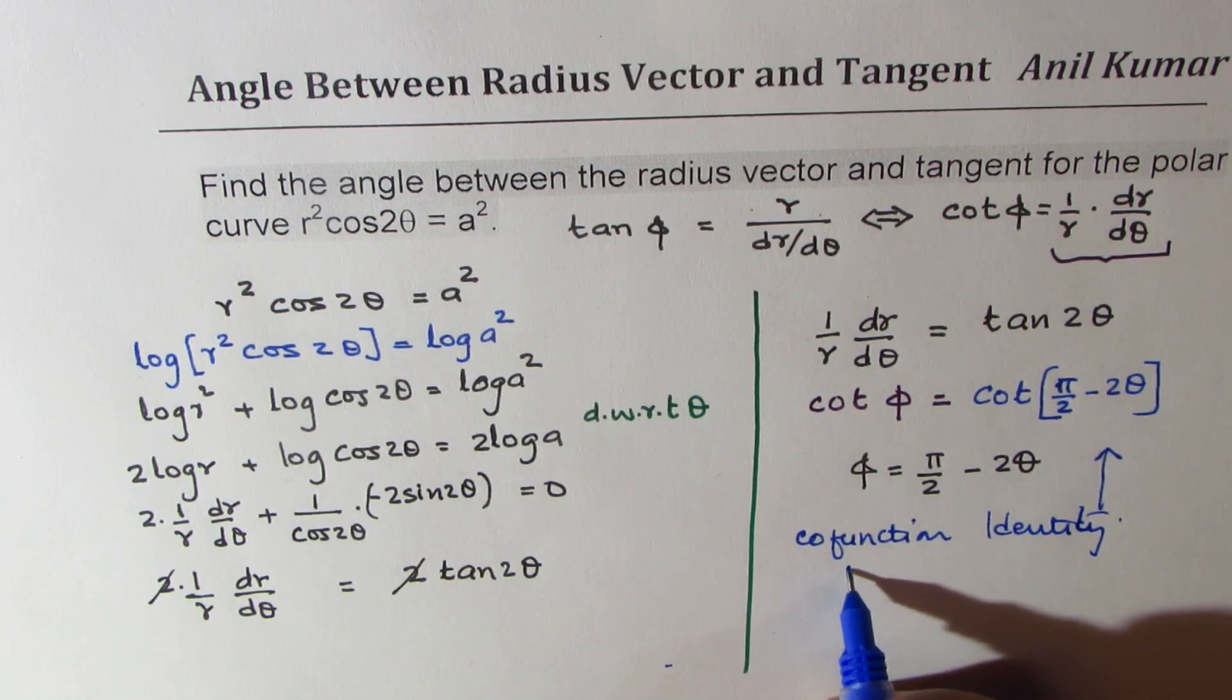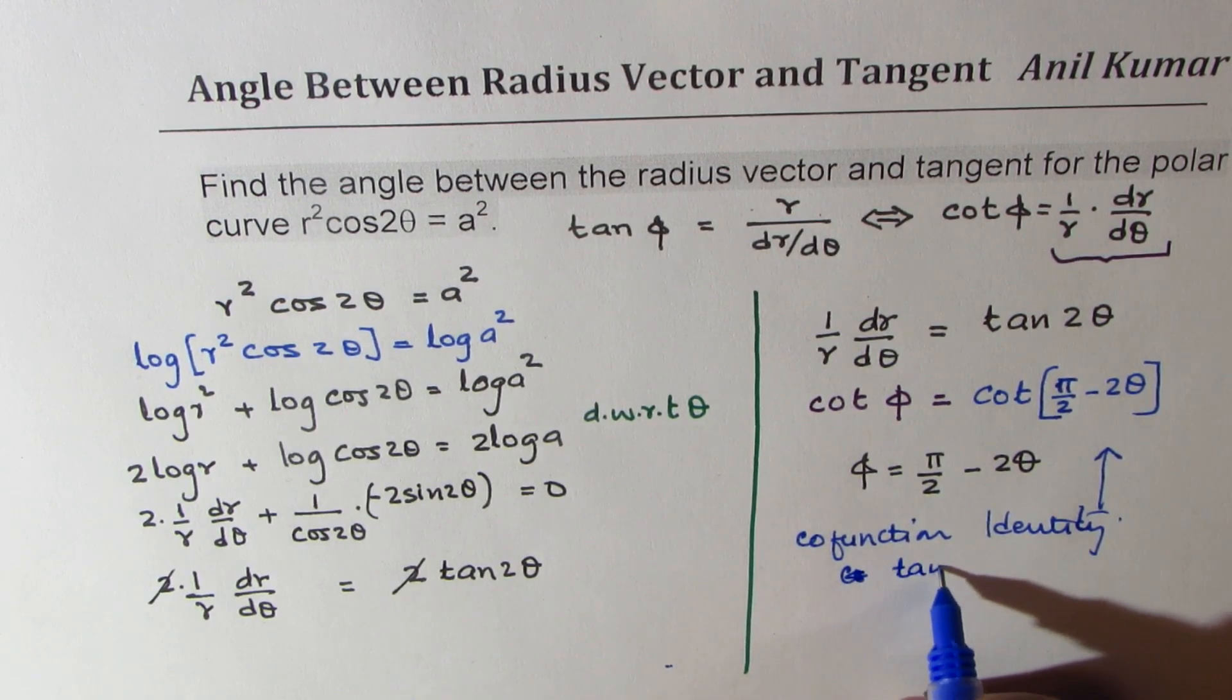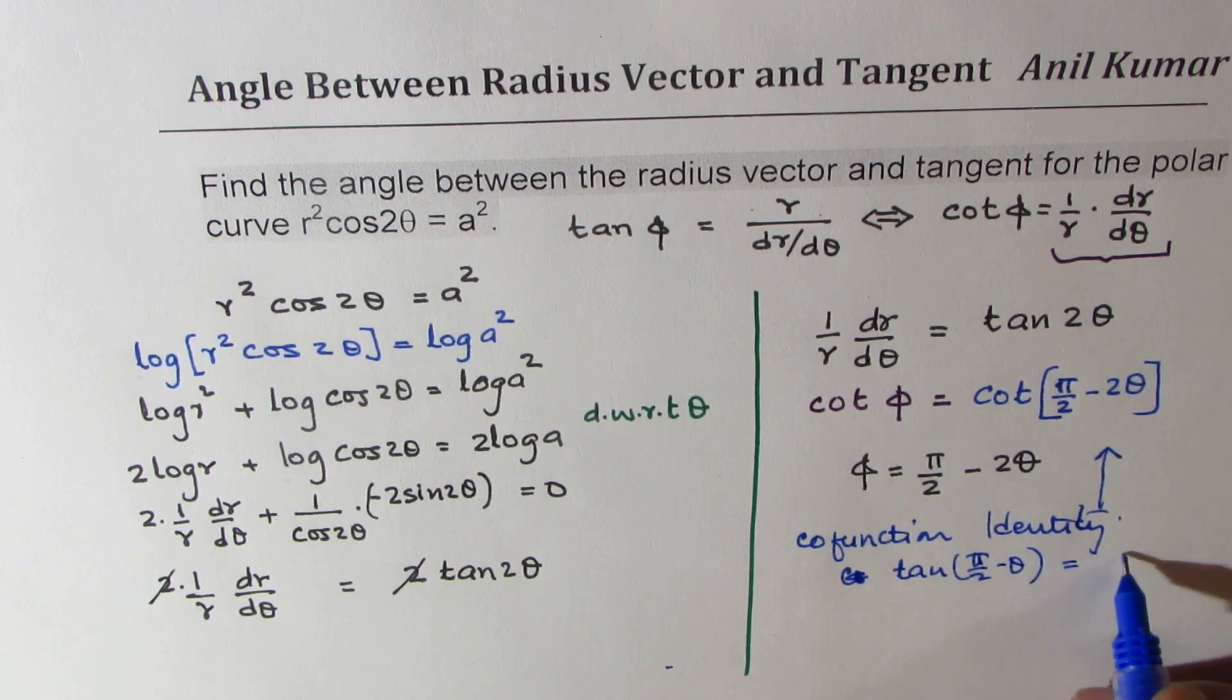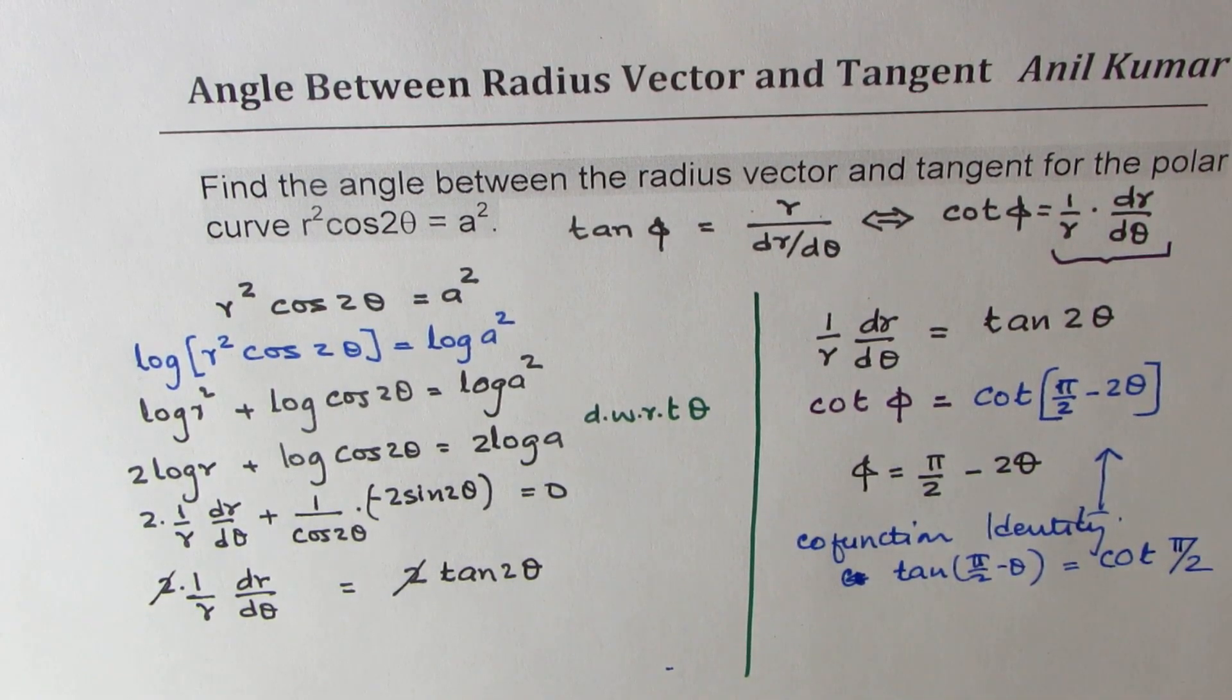That is we could write tan(π/2 - θ) is equal to cot θ. Do you get the idea?